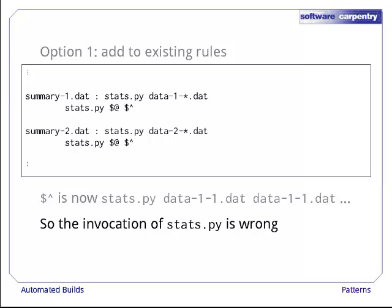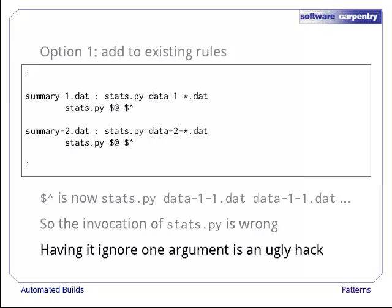So when we run stats.py, our command line will be stats.py, summary1.dat, stats.py again, data1.1.dat, data1.2.dat, and so on. In other words, we'll be telling stats.py to process itself as a data file, which is almost certainly a bad idea. We could fix this by having stats.py ignore files that end in .py or something like that, but it would be an ugly hack.